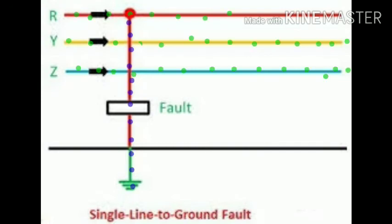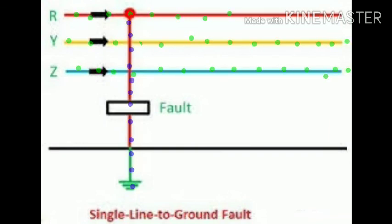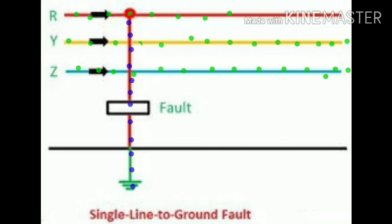Here we also see the single line-to-ground fault, where the R phase is connected to the ground. This type of fault occurs in a transmission line and is called the single line-to-ground fault. These are the types of faults in a transmission line. Thanks for watching — if you have any doubt, please comment in my comment section. Thank you.